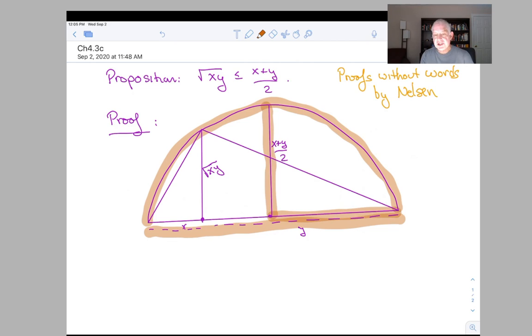And then I have inscribed a triangle whose hypotenuse is the diameter of the circle. So we know from Euclidean geometry, this is another thing that you have to take for granted in this proof,